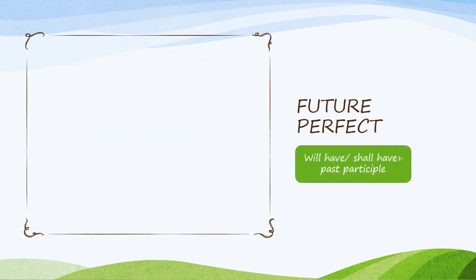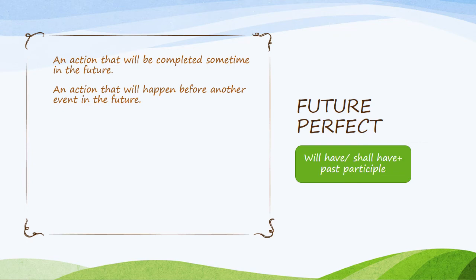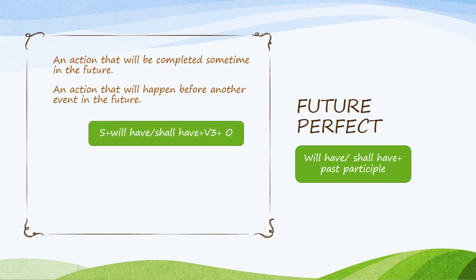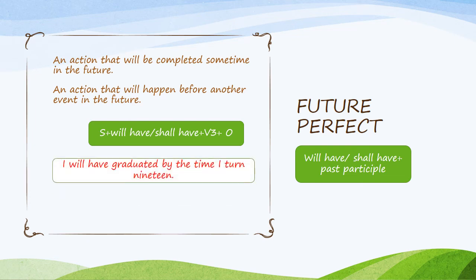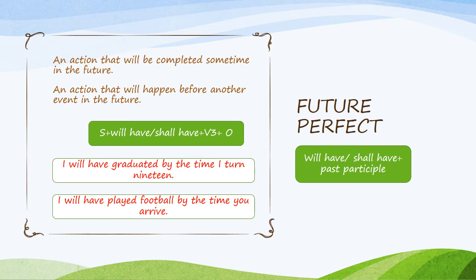Future perfect — will have or shall have plus past participle. An action that will be completed sometime in the future, or an action that will happen before another event in the future. The structure is: Subject plus will have or shall have plus V3 plus object. For example: I will have graduated by the time I turn 19. Or: I will have played football by the time you arrive.